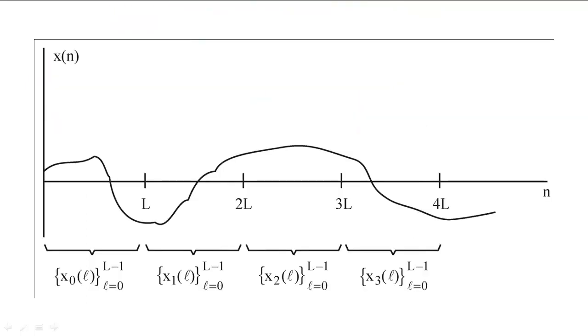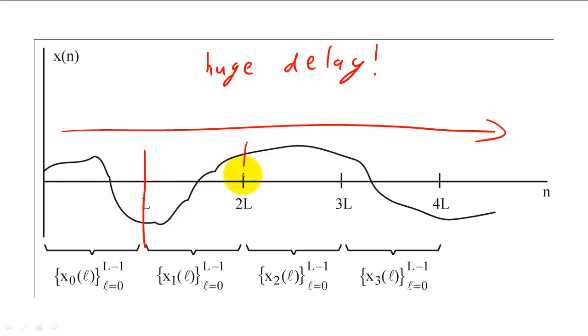If our input sequence is very long, we still have to wait for the entire length of x to enter the system before we can compute the convolution with the FFT. This wait would cause a huge delay in the system. To minimize this delay and still use the FFT, we can split the input into a set of shorter signals. We would then convolve each of these shorter signals with the filter.